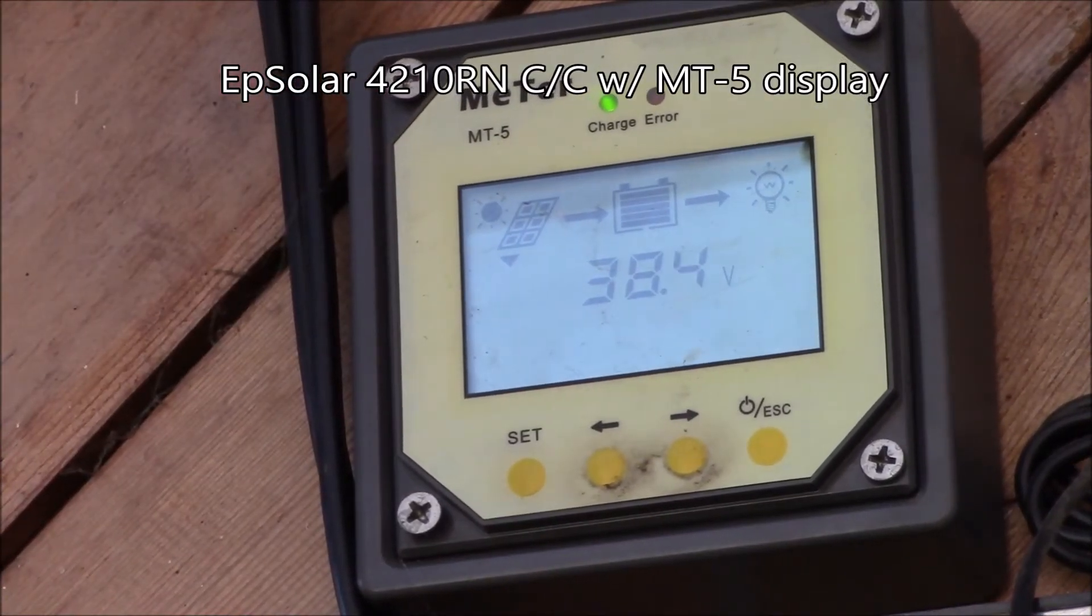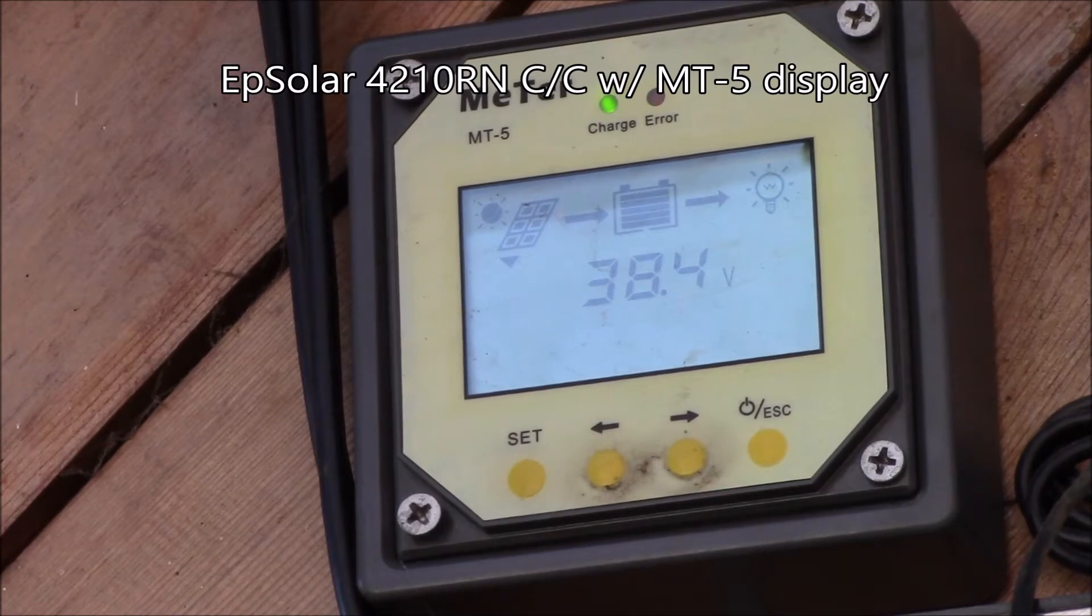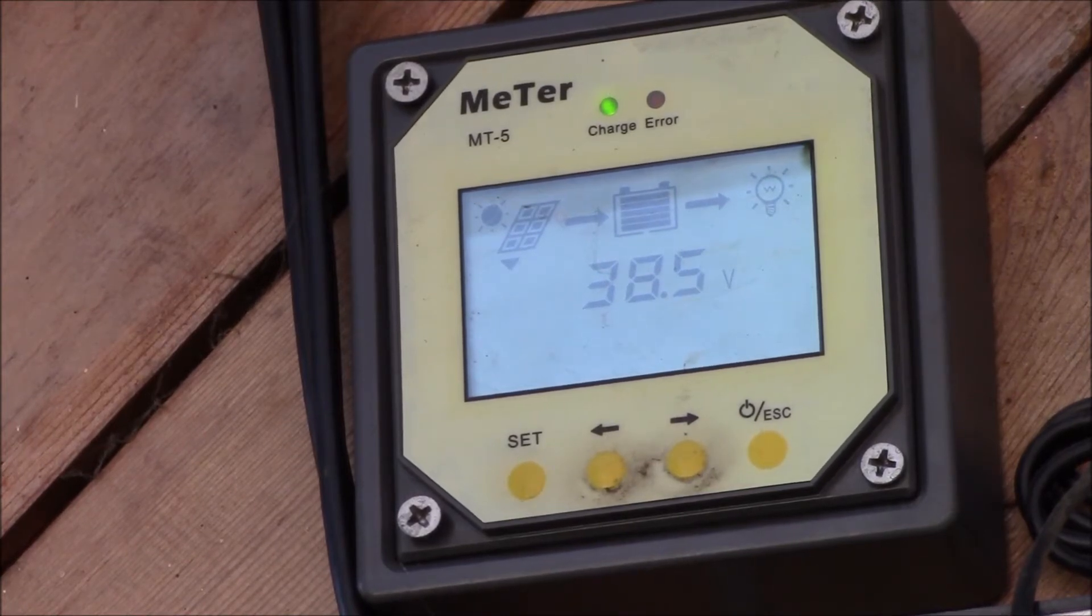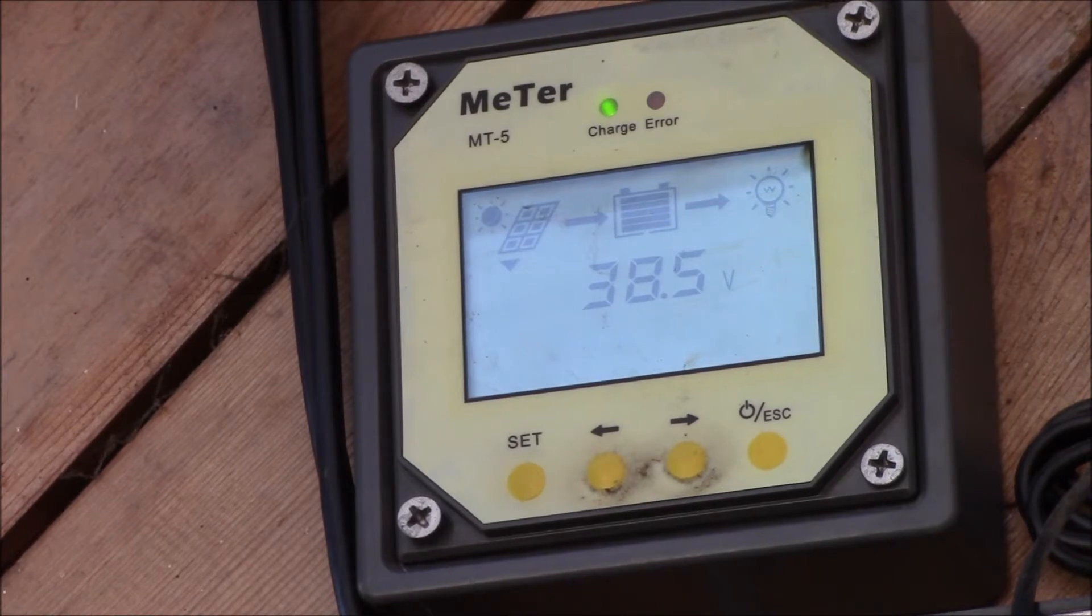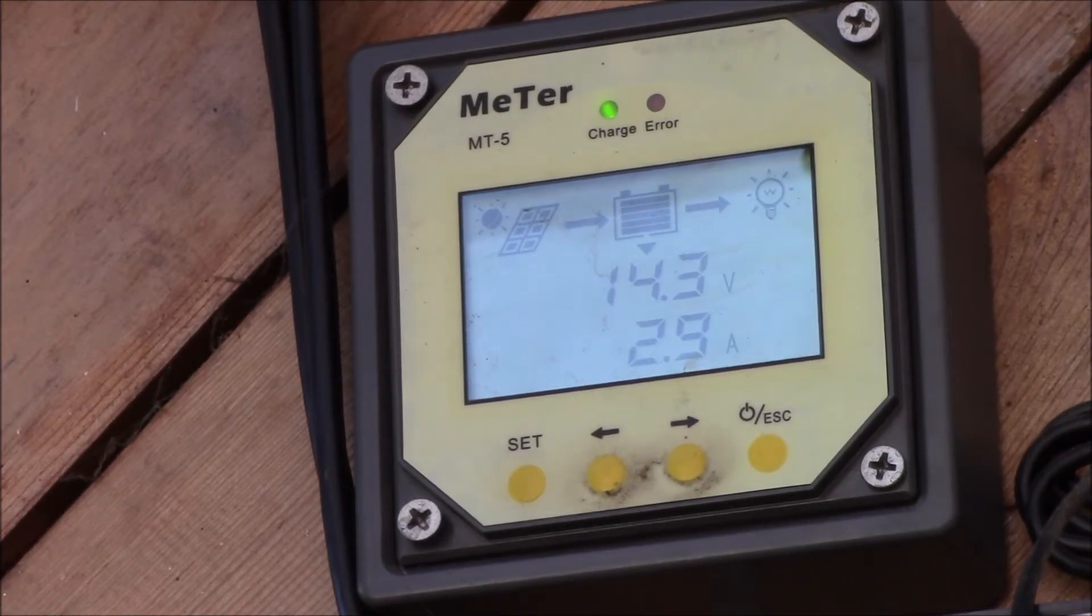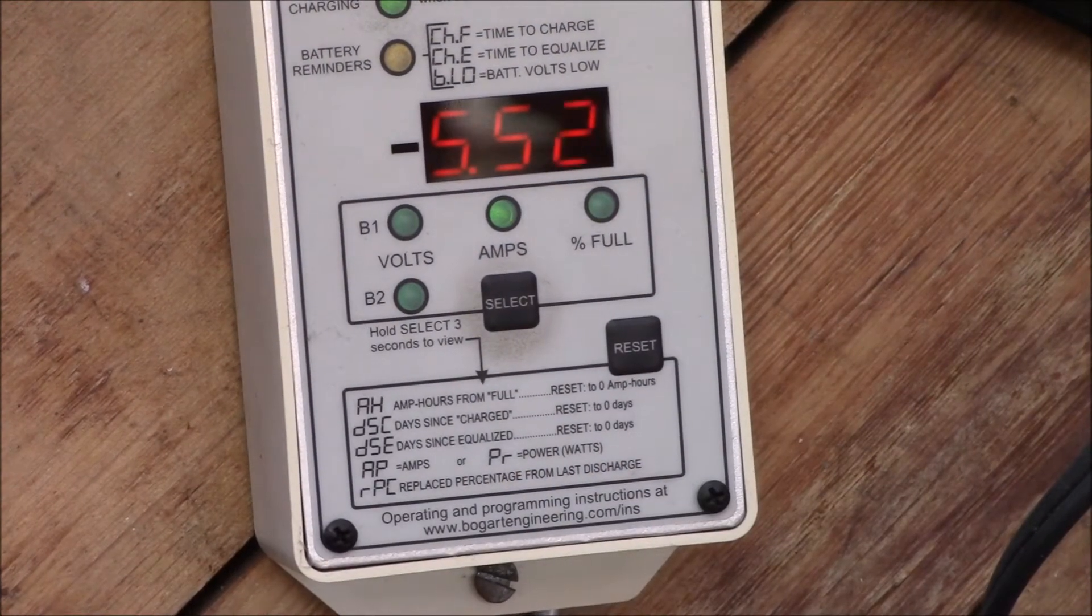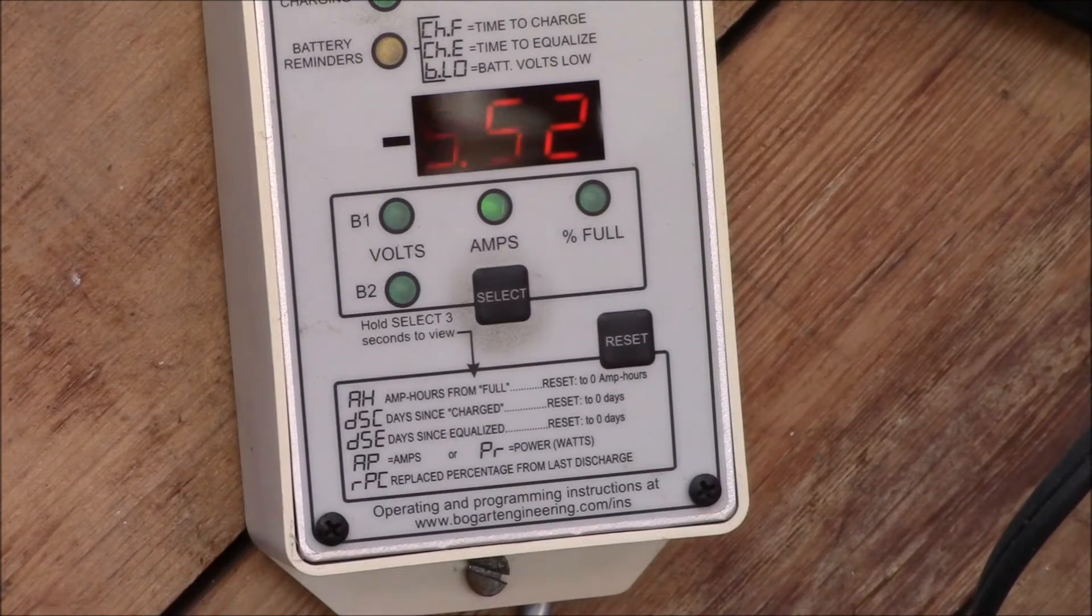It's at 38.4, definitely a higher voltage than the old panels did. They were more like 30 volts. And we've got the batteries up to 14.3.